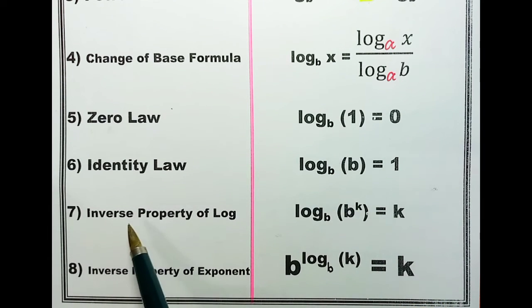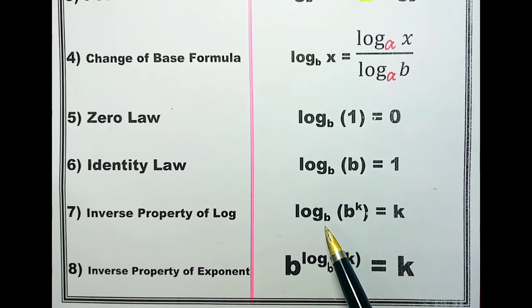Law number 7 inverse property of log. You can see that the base of log and the argument are same. So whenever the base of log and argument are same, whatever power the argument has, that becomes the result.